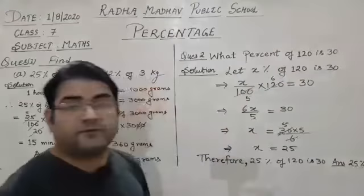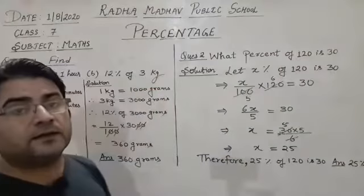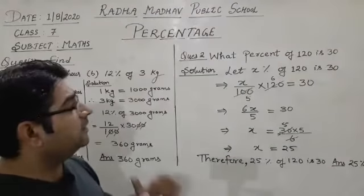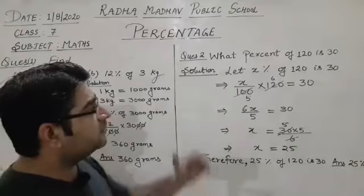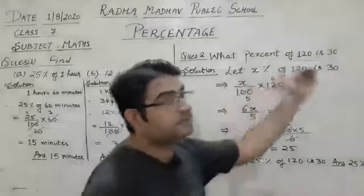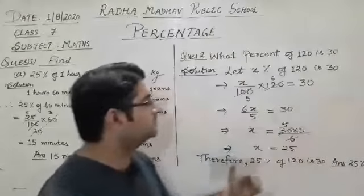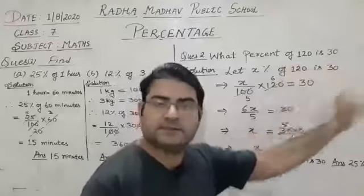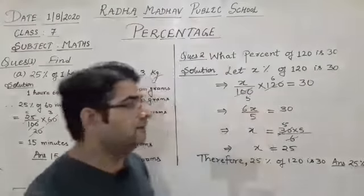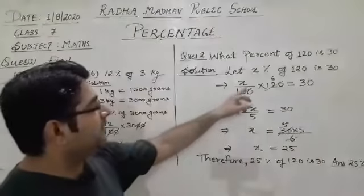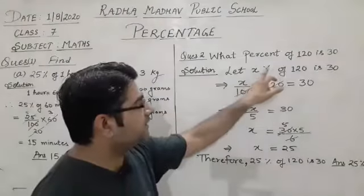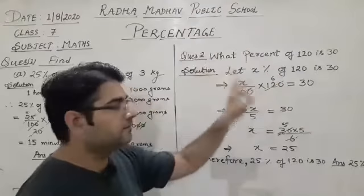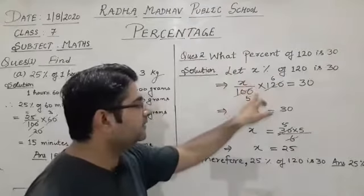Question number two: what percent of 120 is 30? We have to find out the numerical value of the percentage — that is, how much percent of 120 is 30. So let x percent of 120 equal 30. We remove the percent sign and divide by 100, giving us x upon 100 into 120 is equal to 30.